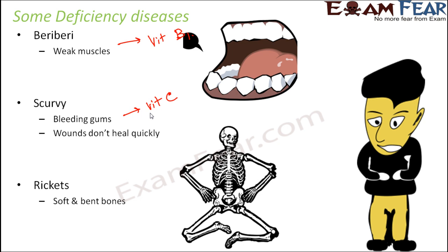Rickets is a condition where the bones become very soft and bent — so soft that they can break any time and are not able to bear any load. Bones help us move our arms, legs, and fingers, and they play a very important role in flexibility. But if the bones are very soft, they tend to bend and do not provide any structural stability. Rickets is caused by the deficiency of vitamin D.